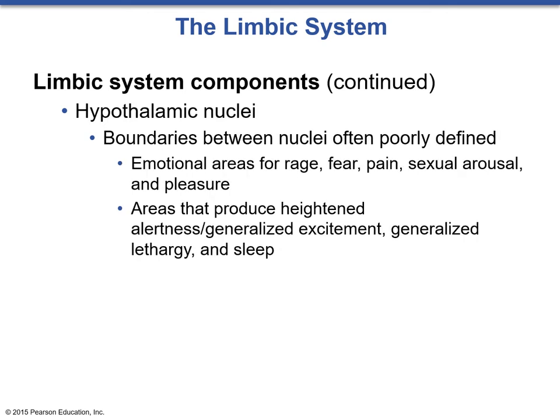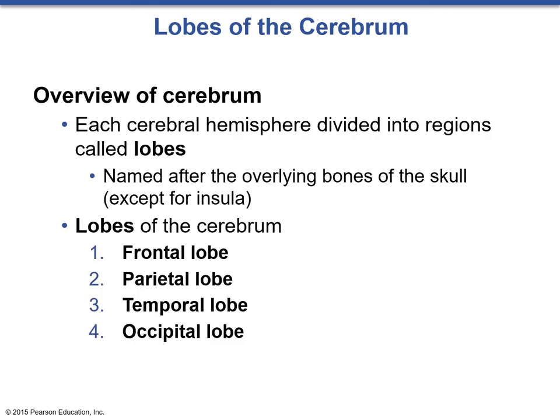The hypothalamic nuclei forms the boundary between nuclei and deals with emotional areas for rage, fear, pain, sexual arousal, and pleasure, and produces heightened alertness. Moving back out from the limbic system, we will talk about the largest region of the brain, the cerebrum, which contains two hemispheres — right and left. The cerebrum is the center of conscious thought process and all intellectual function. It processes somatic, sensory, and motor information, makes decisions about subsequent actions, and a hallmark of Homo sapiens is how much cerebrum has grown relative to other brain areas.